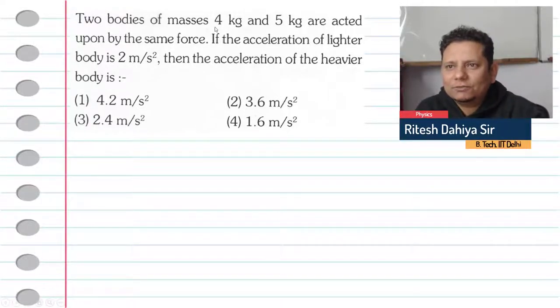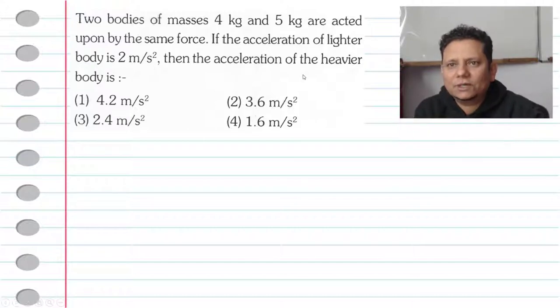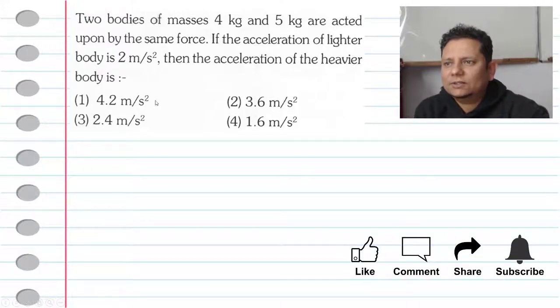The next question says two bodies of masses 4 kg and 5 kg are acted upon by the same force. If the acceleration of the lighter body is 2 m/s², then the acceleration of the heavier body will be...